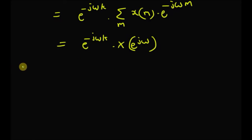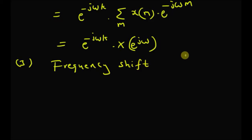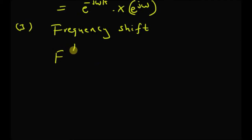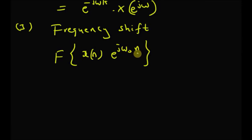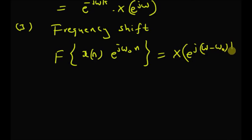Now let us look at the third property: frequency shifting, that is shifting in frequency. When a signal x of n is multiplied by an exponential e power j omega nought n, it is the same as shifting the frequency by omega nought. That is, when we multiply or modulate a time domain signal with exponential of j omega nought, it is the same as shifting the spectrum by omega nought in the frequency domain.